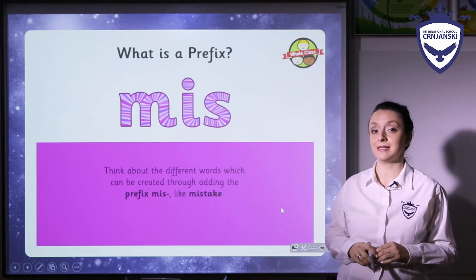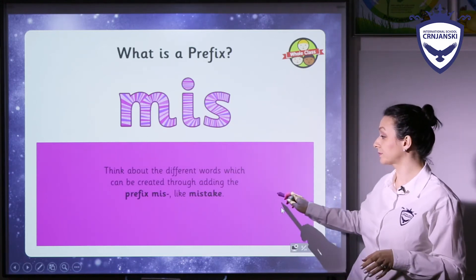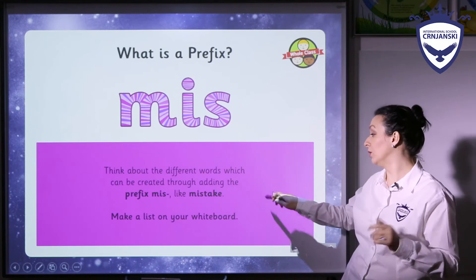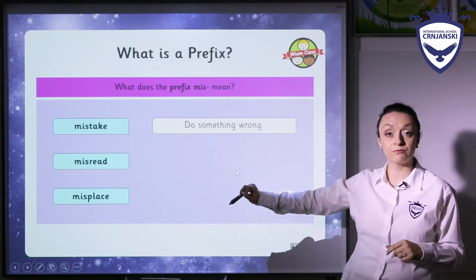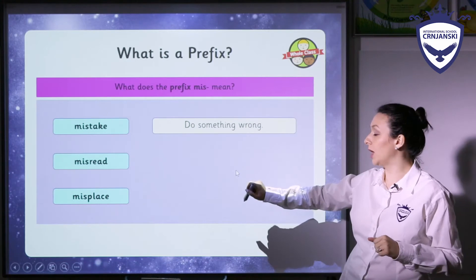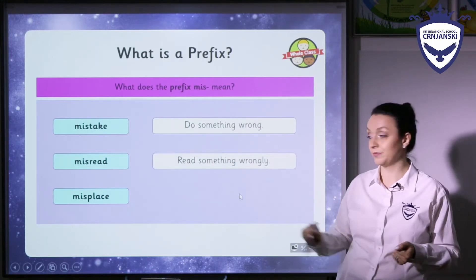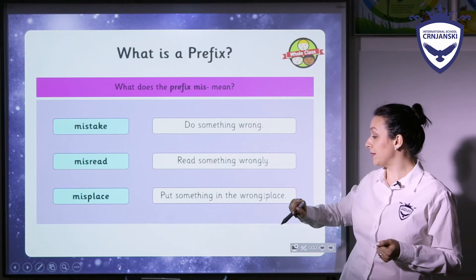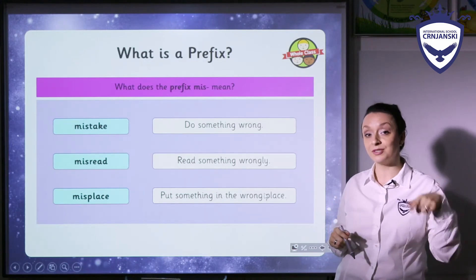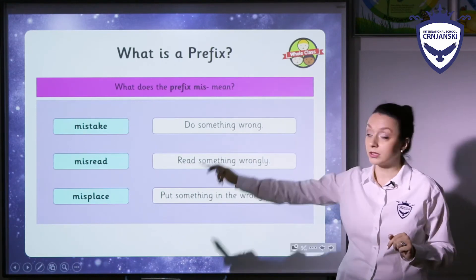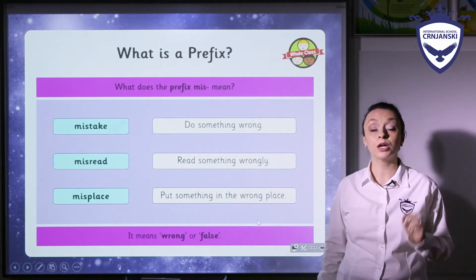Now let's see what about the prefix mis. Think about the words that you can make by using mis as the prefix — for example mistake or something else. Mistake means do something wrong. Misread means read something wrongly. Misplace means put something in the wrong place. Or for example mispronounce a word, meaning pronounced it wrongly. The conclusion is that the prefix mis means wrong or false.